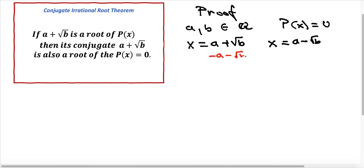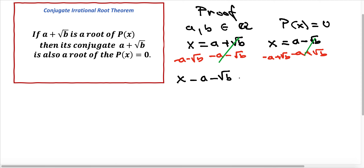So for the first solution: x minus a minus square root of b equals 0. And doing the same for the other solution: x minus a plus square root of b equals 0. These are the two factors of the polynomial function.